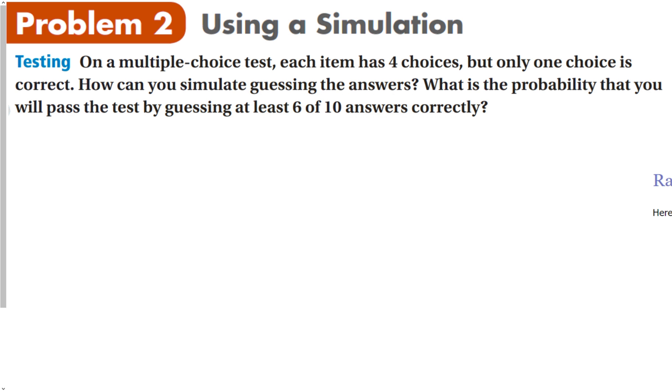On a multiple-choice test, each item has four choices, but only one choice is correct. How can you simulate guessing the answers? What's the probability that you will pass the test guessing at least 6 out of 10 answers? We don't want to make up a bunch of tests to try to figure out what the probability is. We can use a simulation.